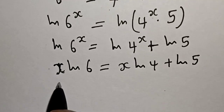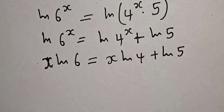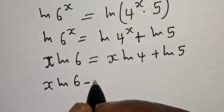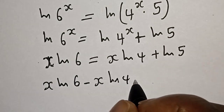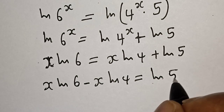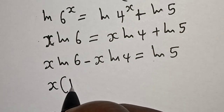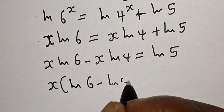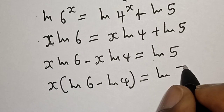Let's bring the x·natural log of 4 to this side. We have x·natural log of 6 minus x·natural log of 4 is equal to natural log of 5. Then x is common: x bracket natural log of 6 minus natural log of 4 is equal to natural log of 5.